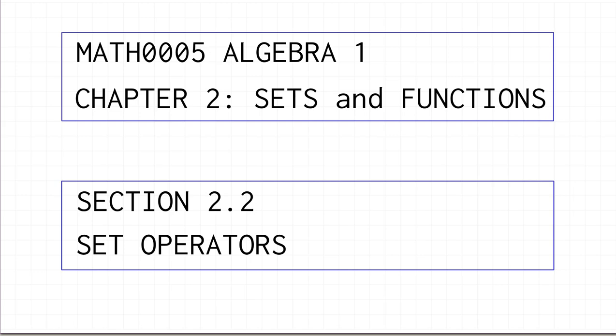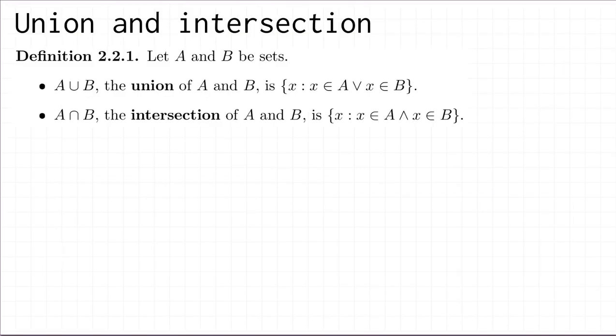In this video, we're going to continue our study of set theory by looking at set operators, which are ways to combine two sets to make another one. We'll begin with union and intersection. If you've got two sets A and B, then the union of A and B is defined to be the set of all things x such that x is in A or x is in B. And the intersection of A and B is defined to be the set of all things x such that x is in A and x is in B. We've defined these using the logical notation we developed in chapter one on logic, which will let us use logical equivalences to prove things about sets.